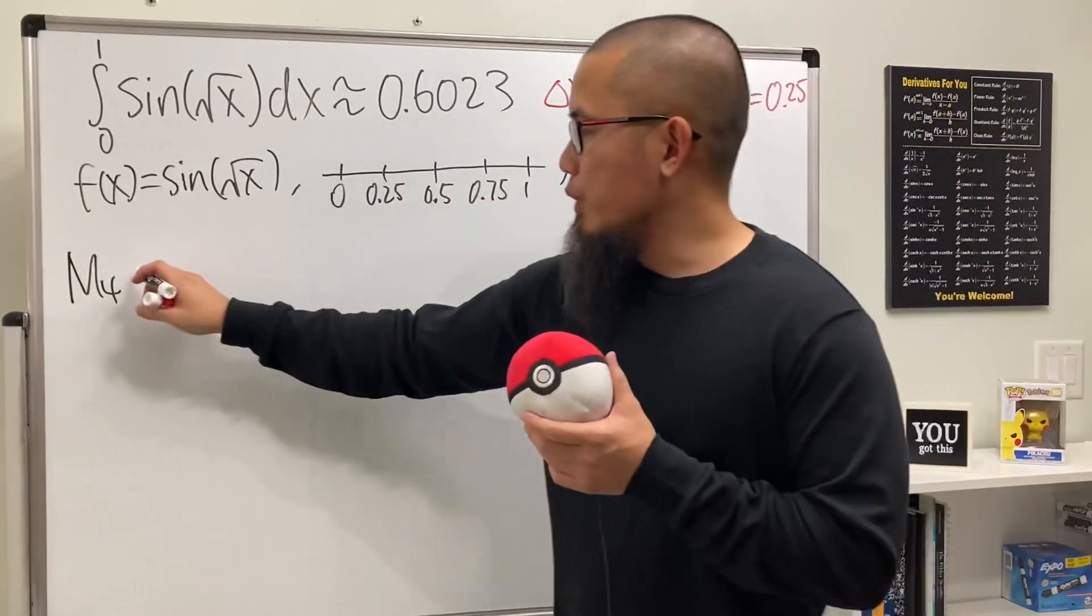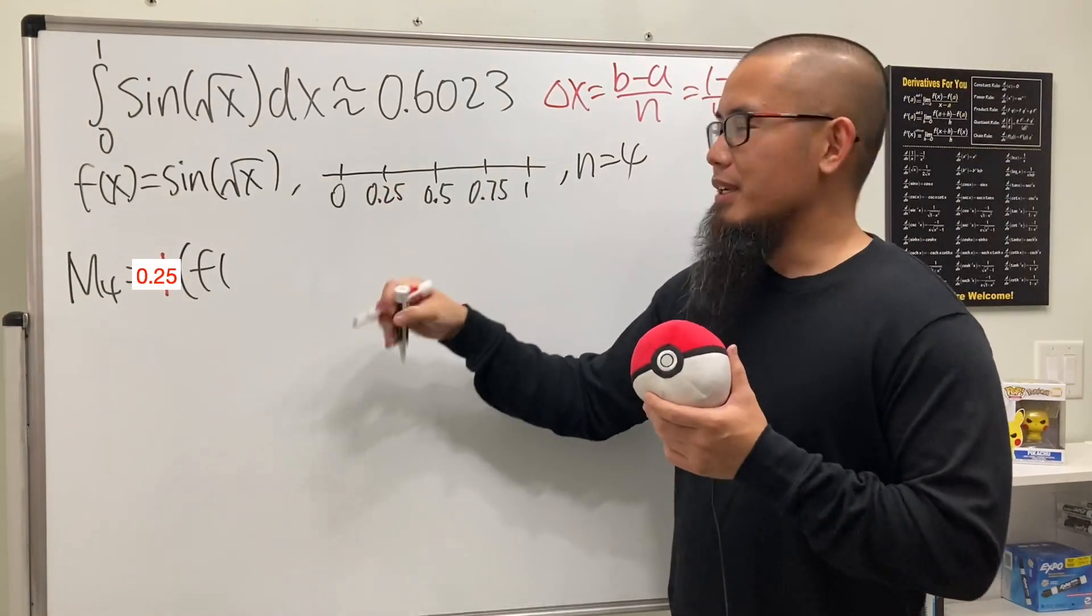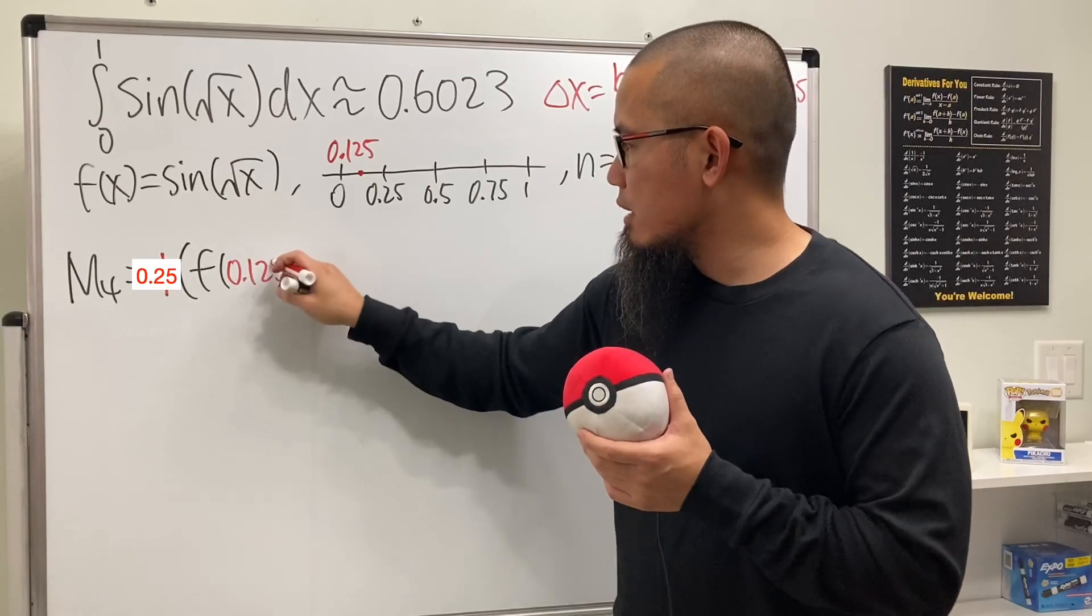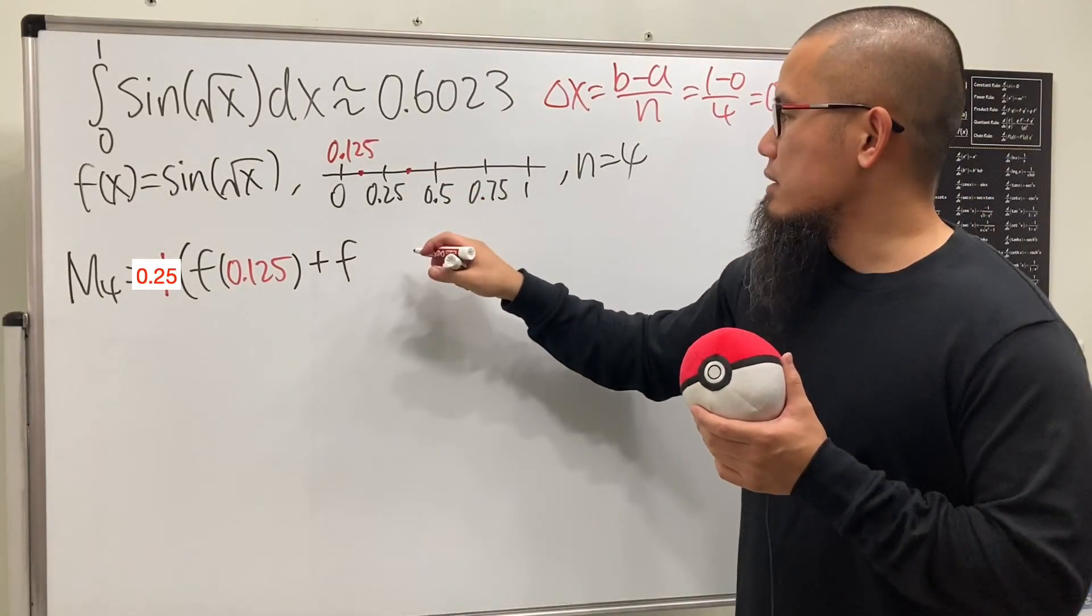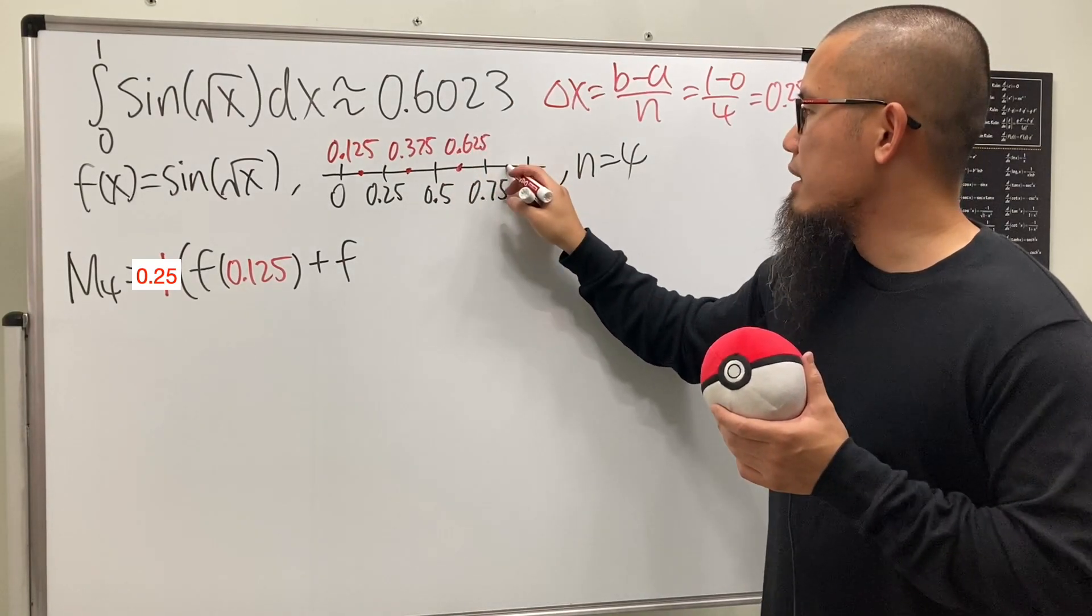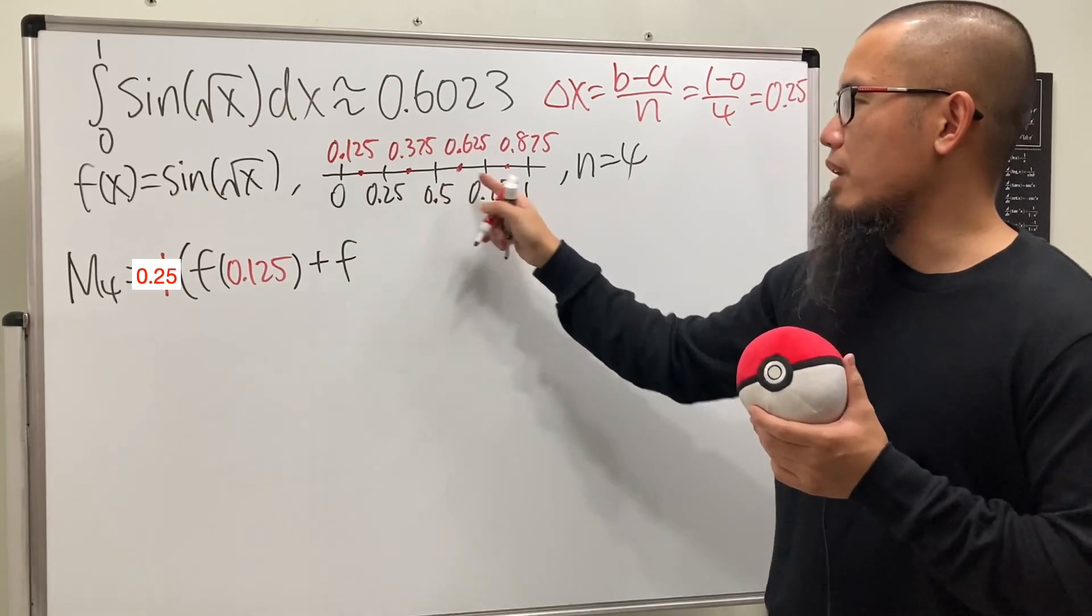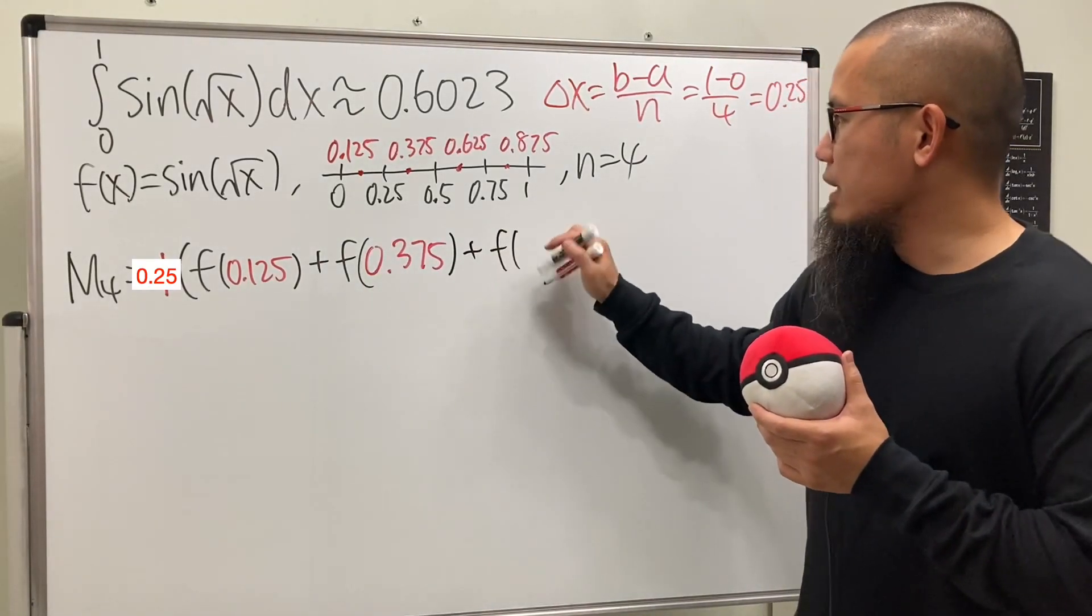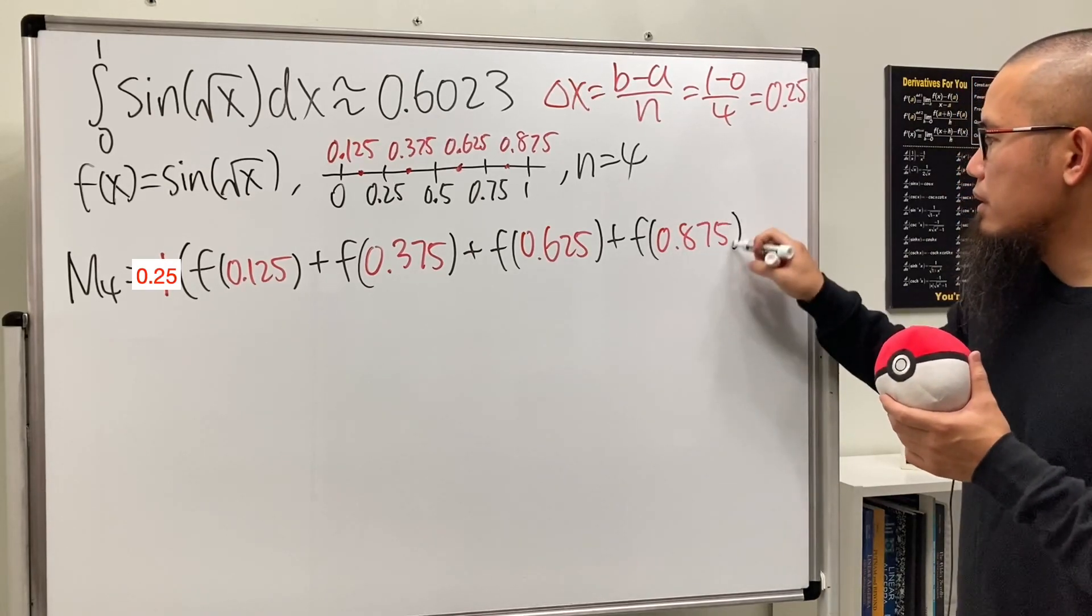For the midpoint rule, we have delta x times f of the middle of the first interval, which is 0.125. The coefficients are just 1 for the midpoint rule. The next x value is 0.375. Let's finish the rest: 0.625 and then 0.875. You just start at the first midpoint and add 0.25 each time. So we add f of 0.375, then add f of 0.625, then add f of 0.875.